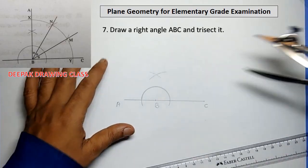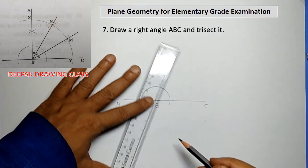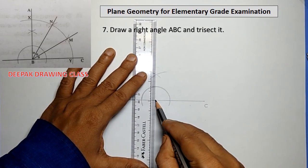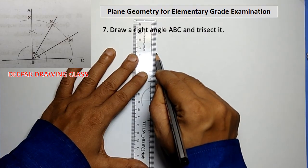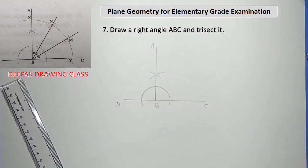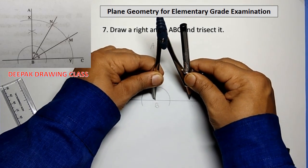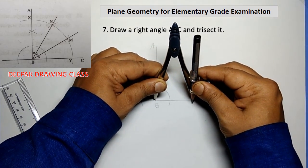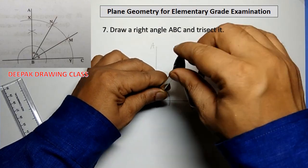Repeat the same and draw another arc above the given line. Now join point B with the arc by drawing a line passing through it and name it as point A. Again, take a compass and